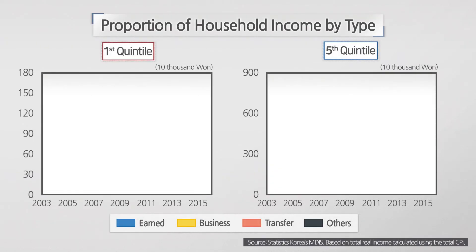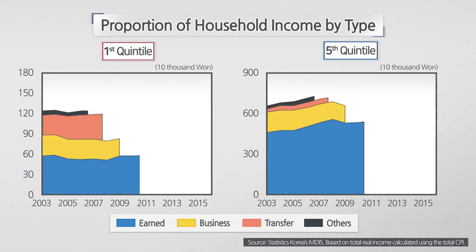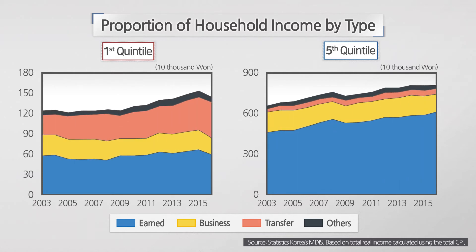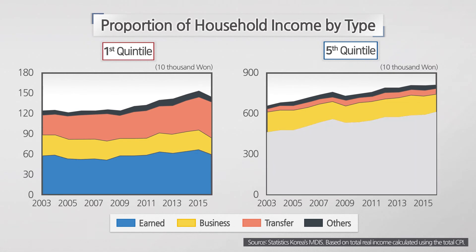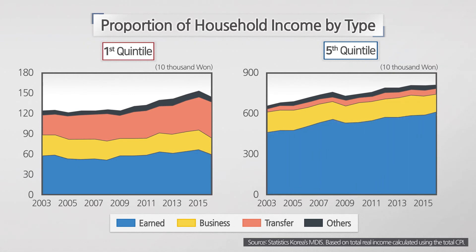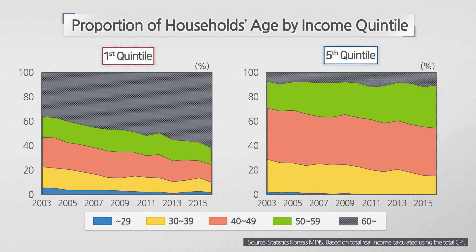How has the gap in real purchasing power changed household income? If we review the type of household income by quintile, we can see that the real earned income for the first quintile has stalled since 2003, while that of the fifth quintile has consistently risen. It should be noted, however, that the real purchasing power gap has not widened as the transfer income of the former has increased rapidly since the financial crisis. The main force driving the sluggish growth in the first quintile's earned income is the increase in the share of households aged 60 and over, whose earned income has decreased upon retirement.